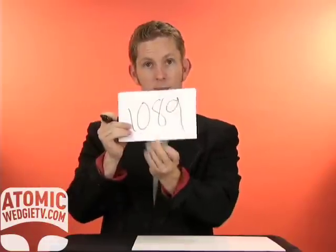First, write 1089 on a piece of paper. Fold it, place it on the table. Next, ask someone for a three digit number. The only rules are that all three digits must be different, and the first digit has to be higher than the last.